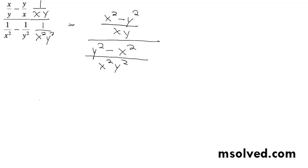We're going to flip these. X squared minus y squared over x y, because it's the same as multiplying times x squared y squared over y squared minus x squared.